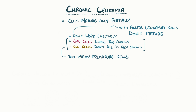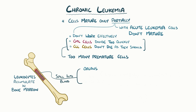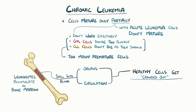Over time, premature leukocytes accumulate in the bone marrow, until eventually they spill out into the blood. Some of these cells settle down in organs and tissues across the body, but others keep circulating in the blood. With a bunch of extra cells in the blood, all the healthy cells get crowded out, and it's tough for them to survive with the extra competition for nutrients.